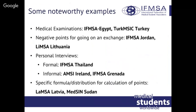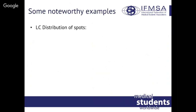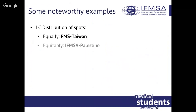Some NMOs use a specific formula for calculating points. Regarding distribution of spots per LCs, there are two approaches. For example, IFMSA-FMS attributes spots equally among their LCs regardless of capacity or number of students — each LC has equal spots. In Palestine, they take a different approach: they check the capacity of each college, how many students are at the university, and how many incoming students they can host, using several different criteria.